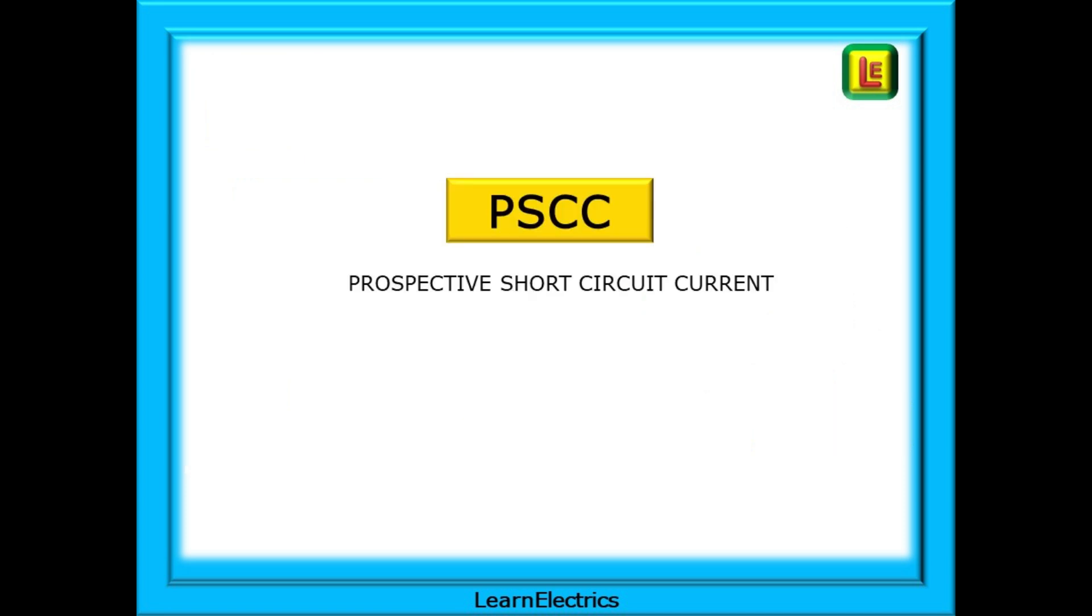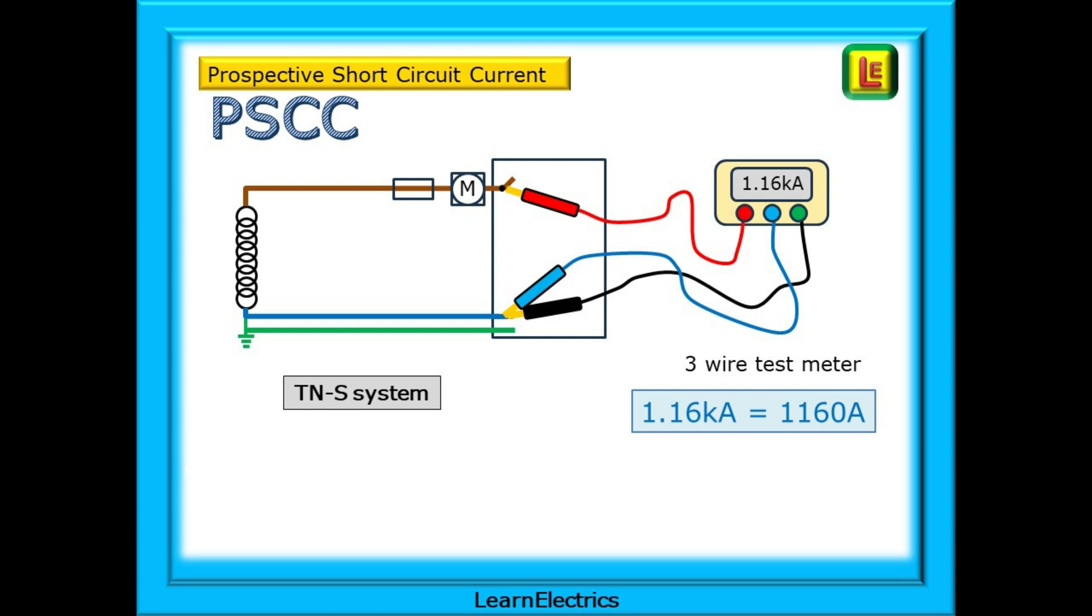We must cover the testing of PSCC as well. The full name is prospective short circuit current, and is the current that we might expect if there was a short circuit between the line and neutral anywhere in the circuit. The worst case short circuit would be at the intake position so this is where we measure PSCC. Anywhere else in the circuit will have more conductors, more resistance and so the PSCC will be slightly lower. We want the worst possible case. If the worst case is okay then all the other points of use are okay too.